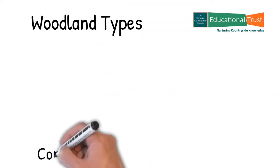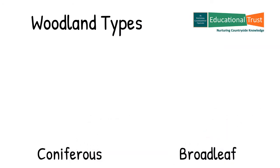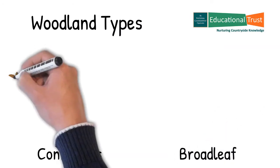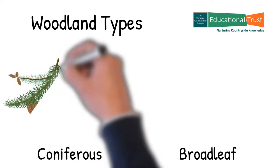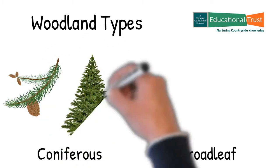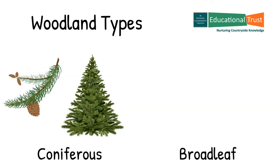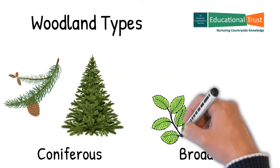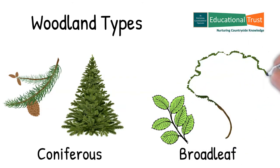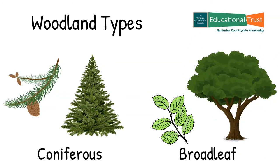Broadly speaking, there are two types of woodland: coniferous and broadleaf. Coniferous woods are made up of trees often having needle-shaped leaves such as the well-known Christmas tree. Coniferous woodlands are often called forests as they are planted for commercial timber purposes. Broadleaf woodlands, as their name suggests, are composed of trees with flat leaves such as oak and beech. Within these broad categories there are many different kinds of woodland depending on the dominant tree species making up the wood.